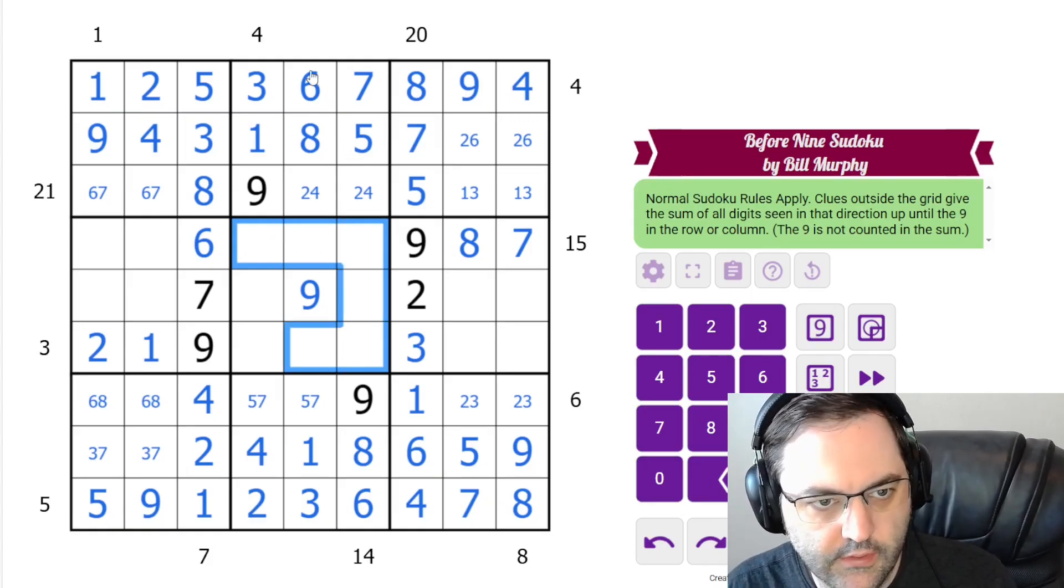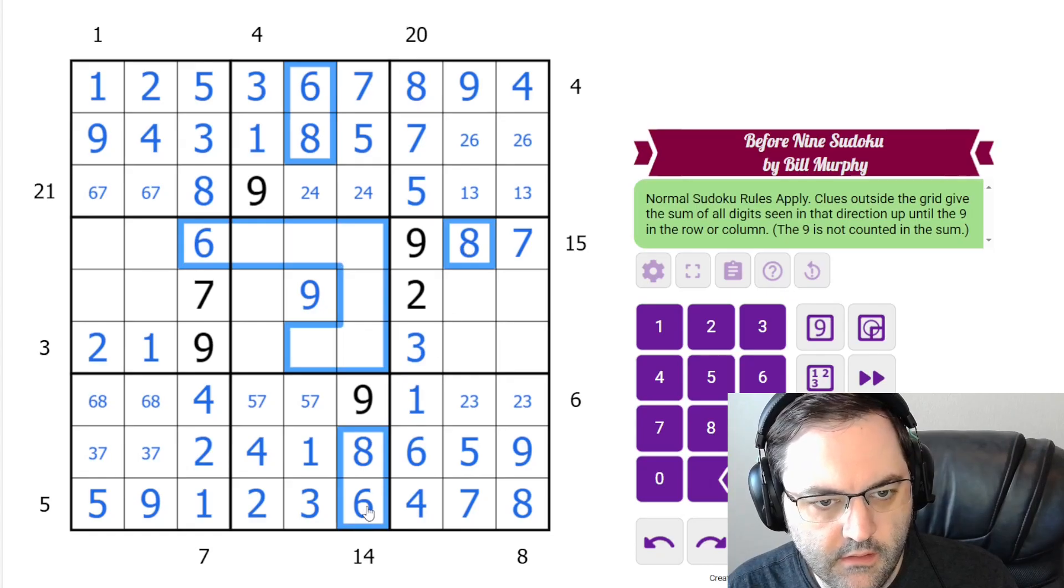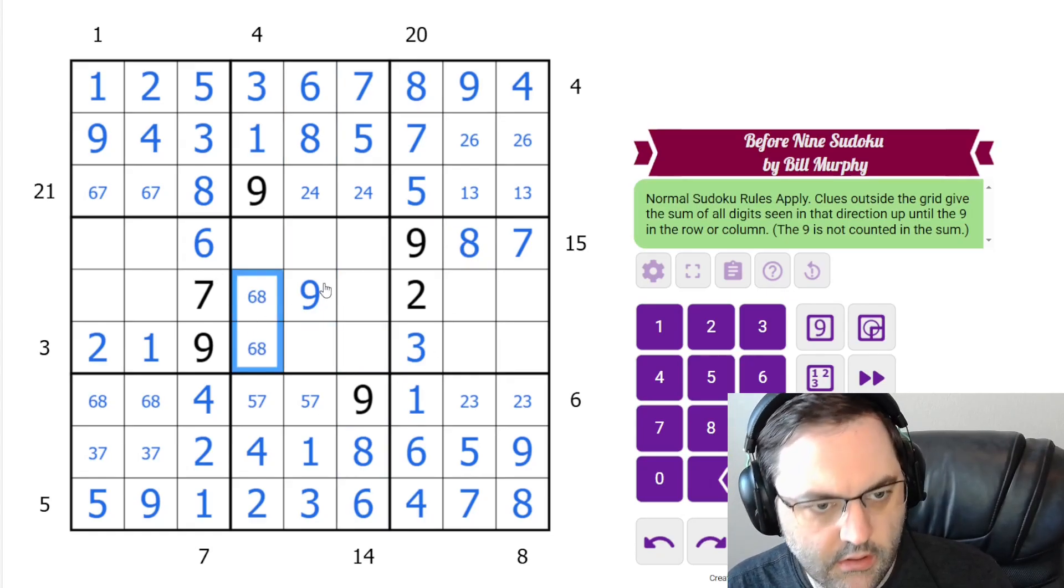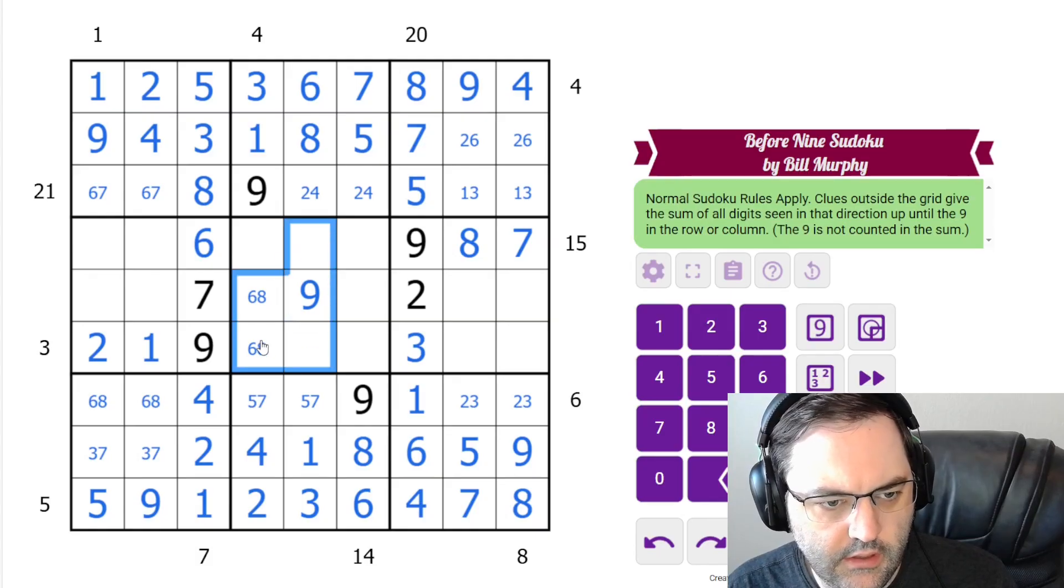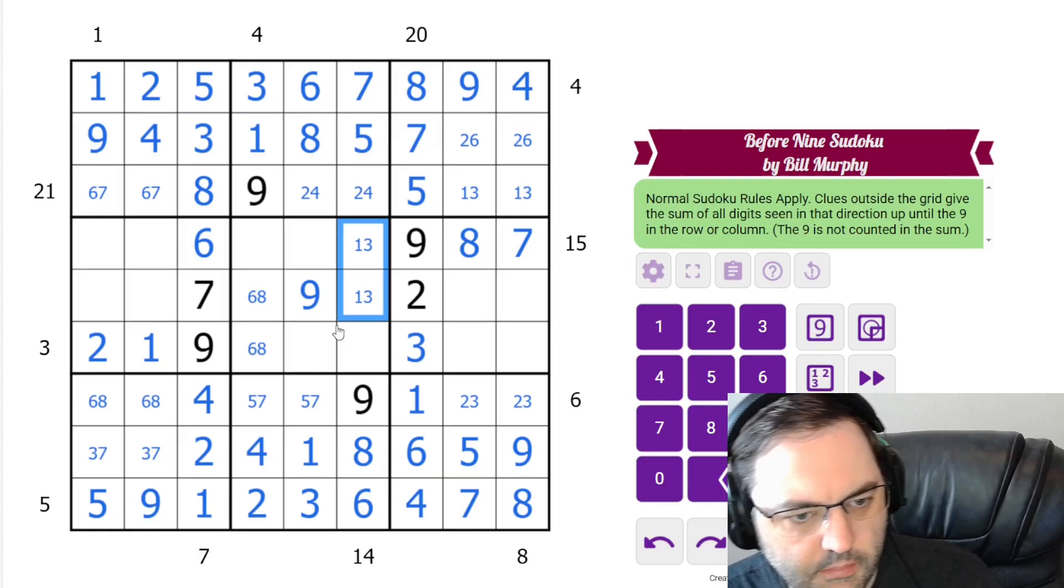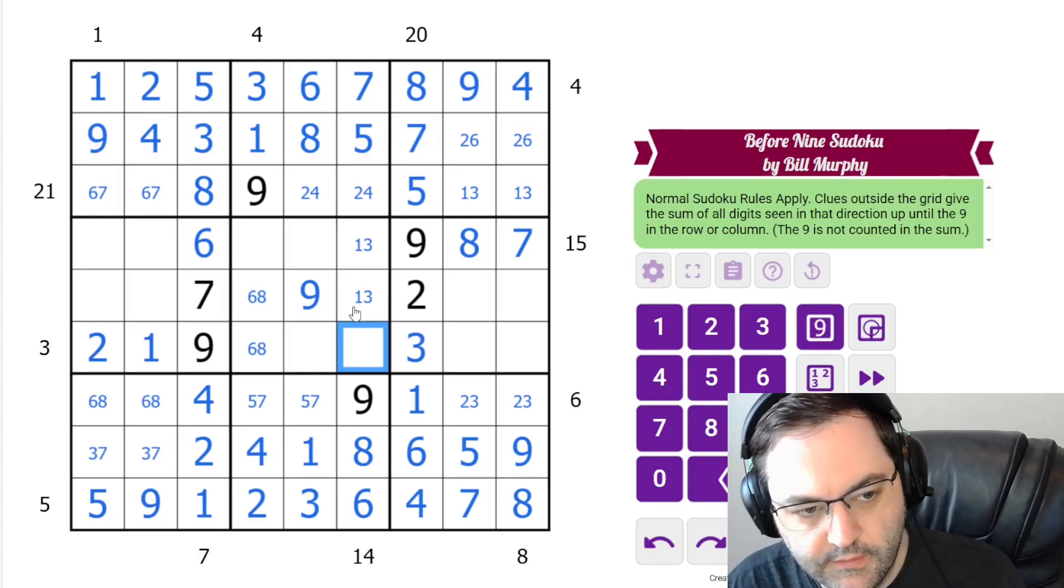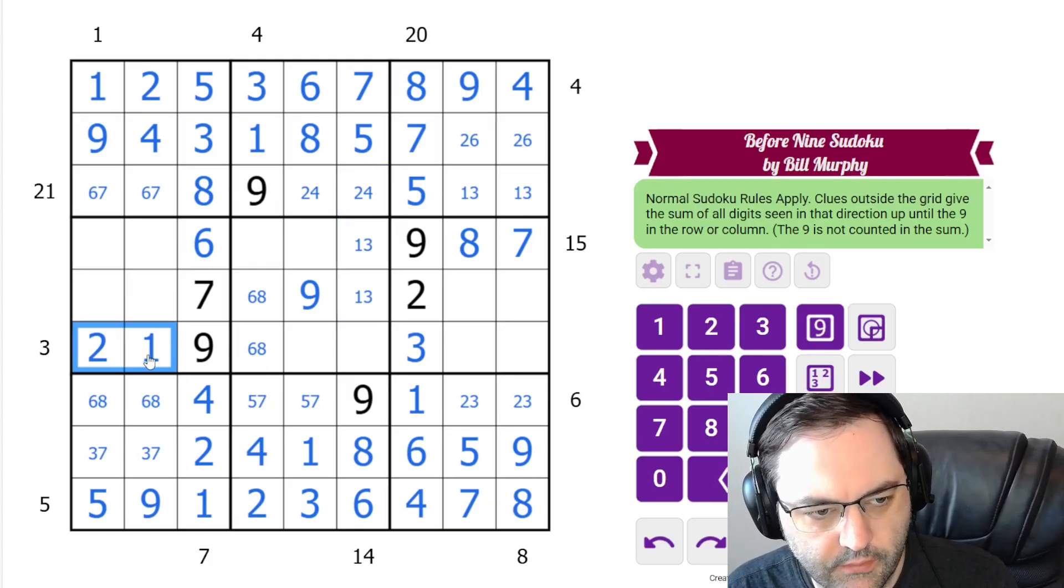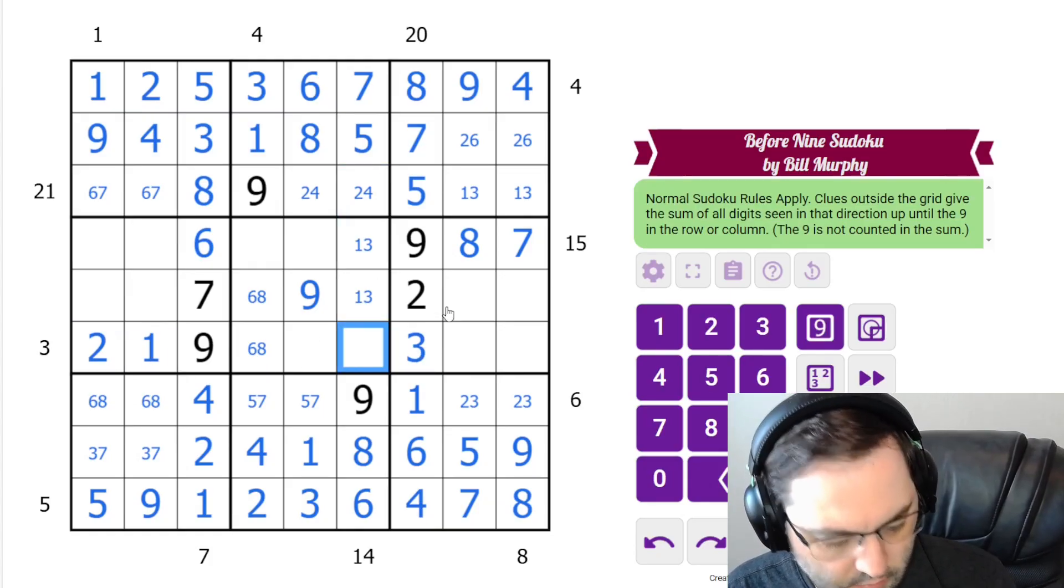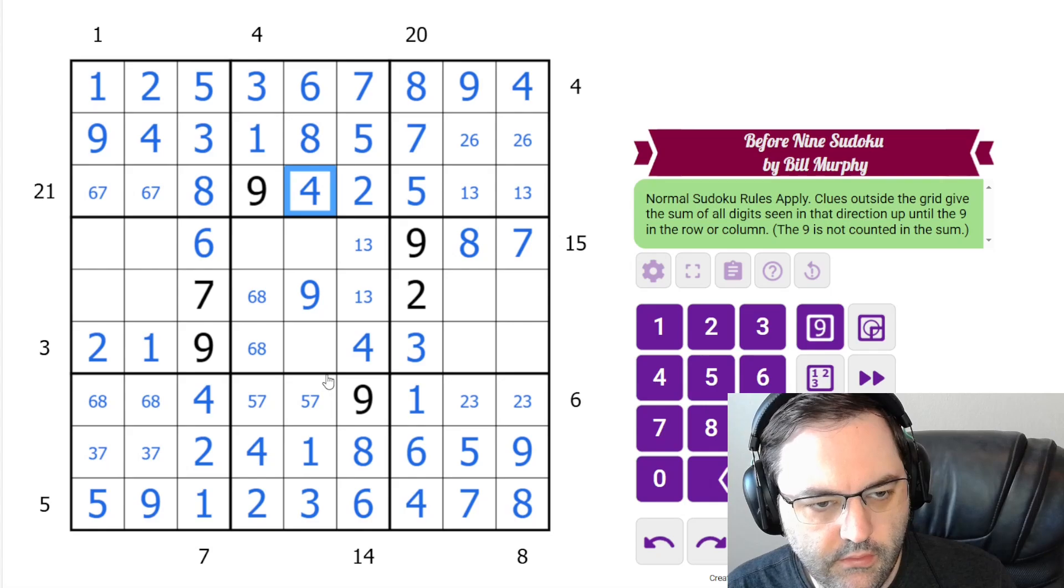So that must be a pair here. And I bet 1 and 3 can't go in these cells. So that's a pair as well. I mean, this is a 2 or 4. We could have seen that by just looking at 1, 2, 3, 4 and see we have a 1, 2, 3 in the row. That's 4, that's 2, that's 4.